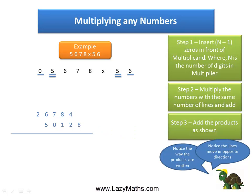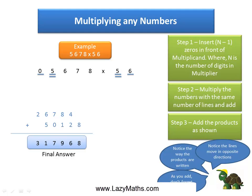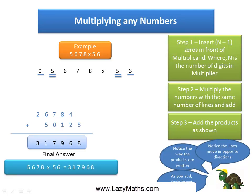As a last step, we simply add these digits. 8 goes in as 8; 4 plus 2 is 6; 8 plus 1 is 9; 7 plus 0 is 7; 6 plus 5 is 11, and with a 1 carryover, the 1 carryover and the 2 gives us 3. Hence the final answer is 317,968. So 5,678 times 56 equals 317,968.